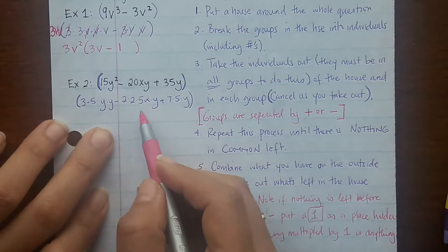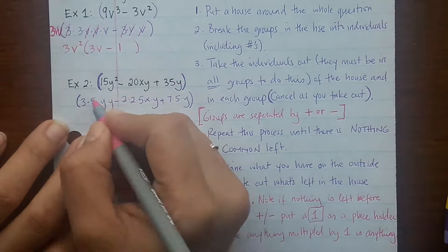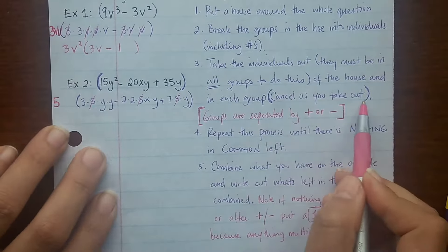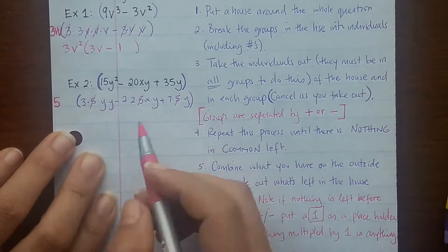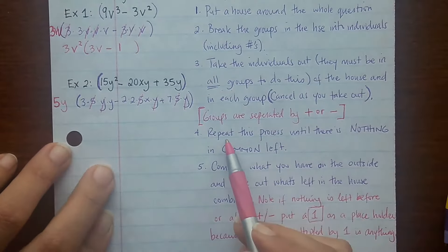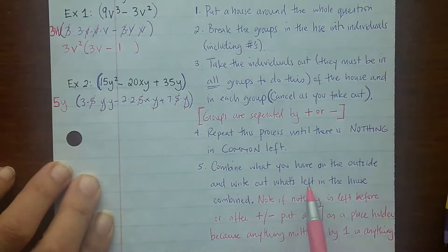Now once you have it broken down, you need to take individuals out. So what's common? I can take out a 5 because it's in every single group. What else can I take out? I can take out a y because it's in every single group. And cross them out as you go. There's nothing left in common. So I've repeated the process. There's nothing in common left.